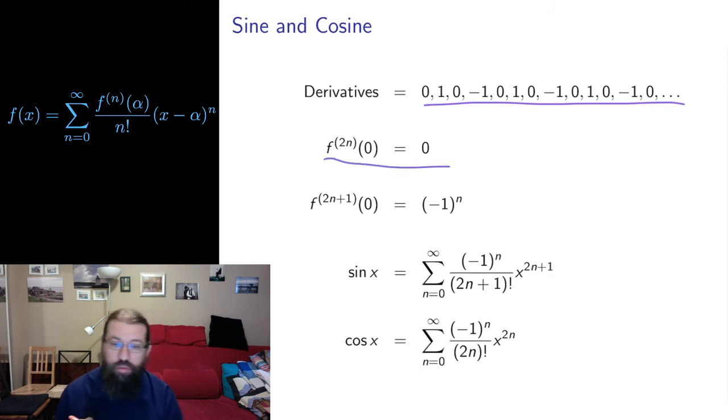All of the even derivatives are 0. All of the odd derivatives are plus or minus 1. So I can express them, if I write them as 2n plus 1, well then with n equals 0, I get the first 1, n equals 0 is positive, n equals 1, n equals 2, n equals 3, n equals 4, I get negative, positive, negative, positive, negative.